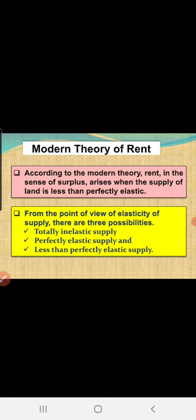According to the modern theory, rent in the sense of surplus arises when the supply of land is less than perfectly elastic. If your land supply is perfectly elastic, and demand continuously increases, then rent also increases. From the point of view of the elasticity of supply, there are three possibilities. First: the supply of land is inelastic.